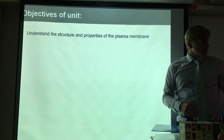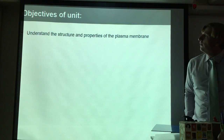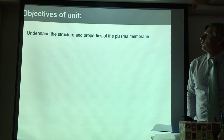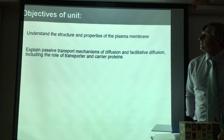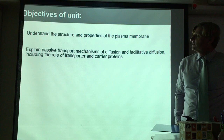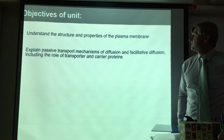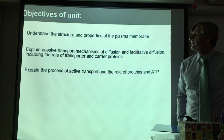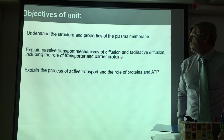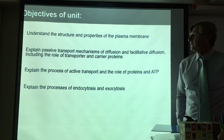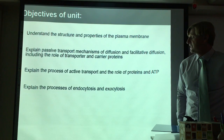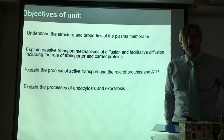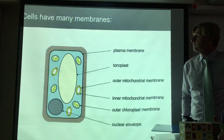The objectives of this talk are: to understand the structure and properties of the plasma membrane; to explain passive transport mechanisms of diffusion and facilitated diffusion, including the role of transport and carrier proteins; to explain the process of active transport and the role of proteins and ATP; and to explain the processes of endocytosis and exocytosis, which we'll touch on later based upon the membrane structure we learn about.